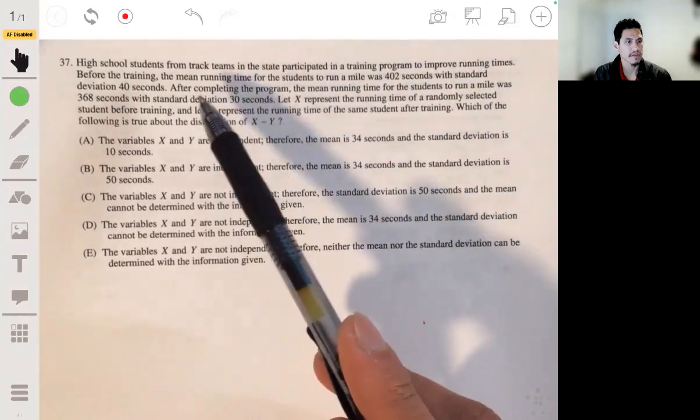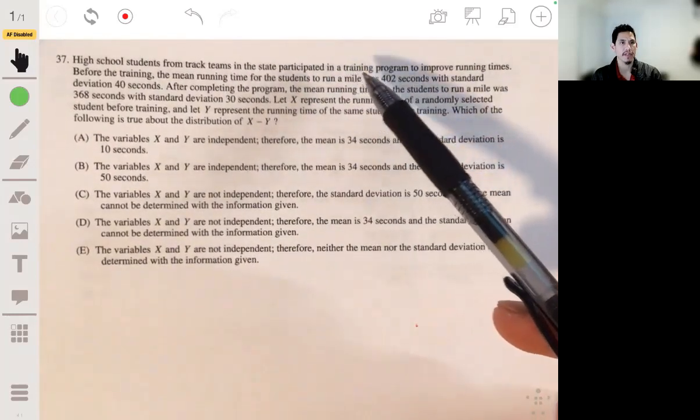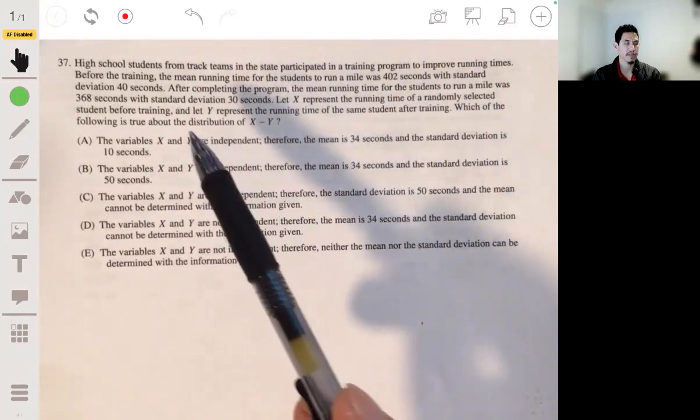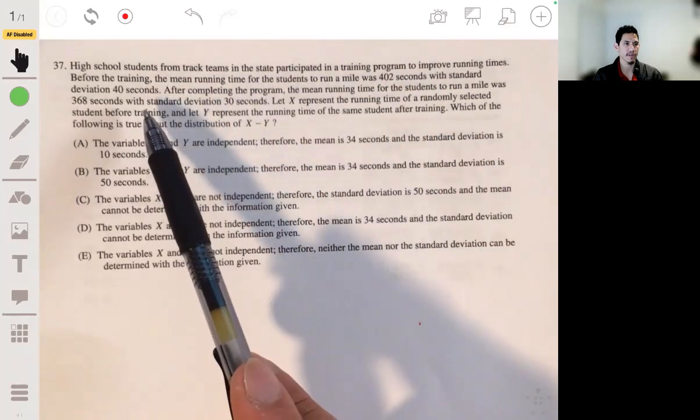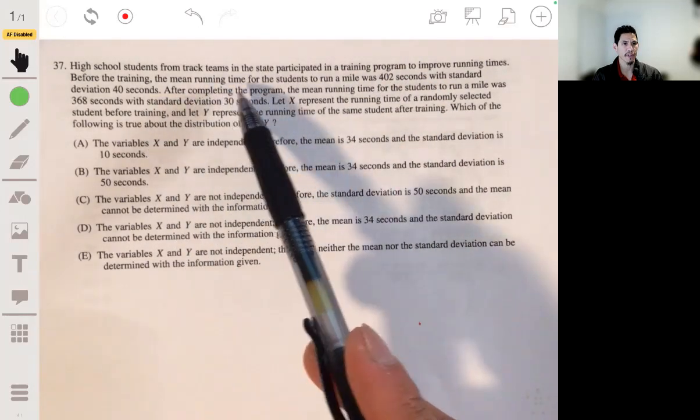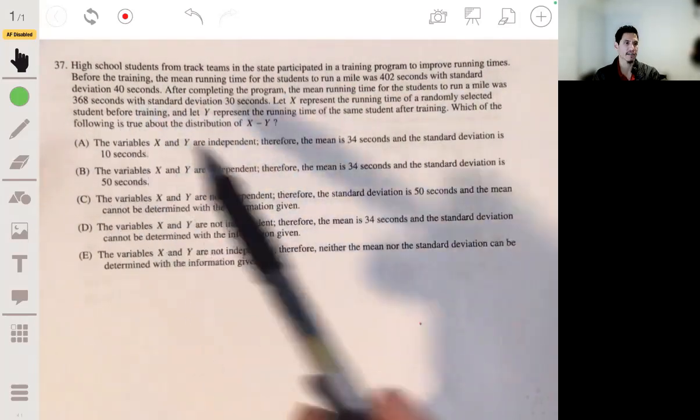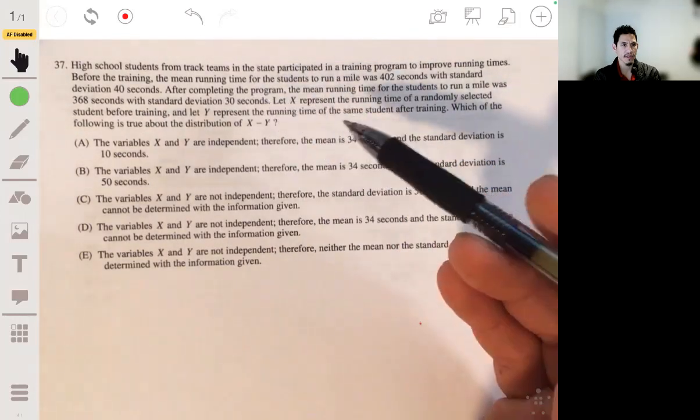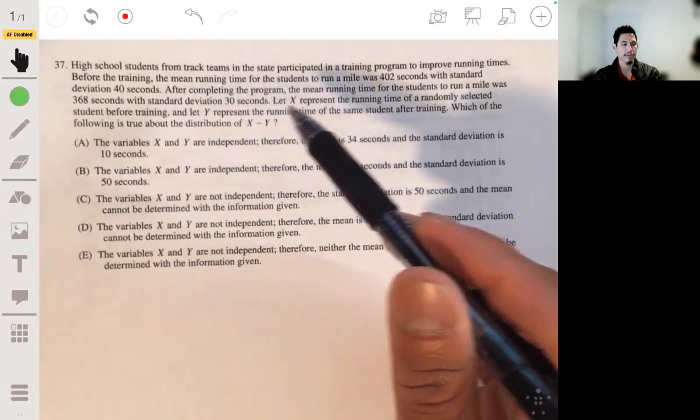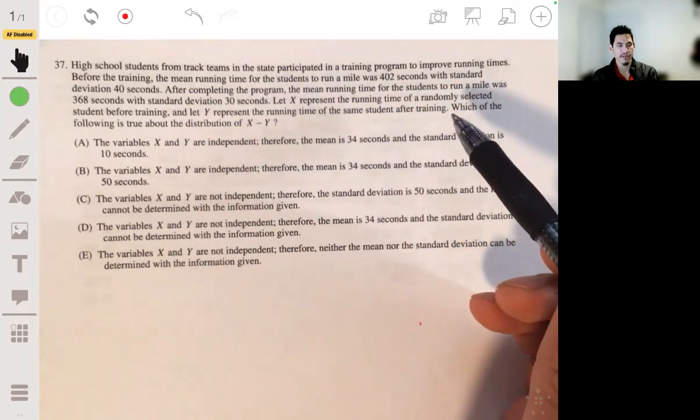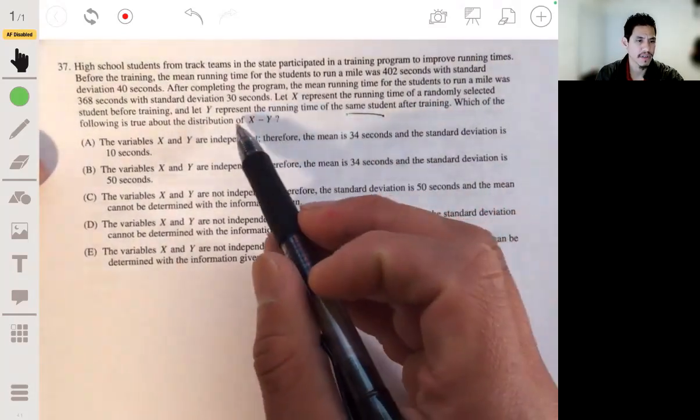All right, 37. High school students from track teams in the state participated in a training program to improve running times. Before the training, the mean running time for the students to run a mile was 402 seconds with standard deviation 40 seconds. And after completing the program, the mean running time for the students to run a mile was 368 seconds with standard deviation 30 seconds. Let x represent the running time of a randomly selected student before training, and let y represent the running time of the same student after training. Which of the following is true about the distribution of x minus y?